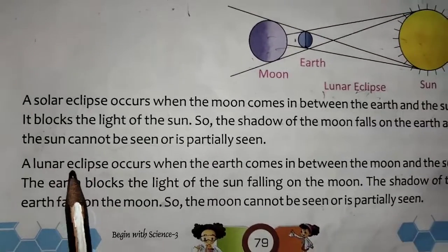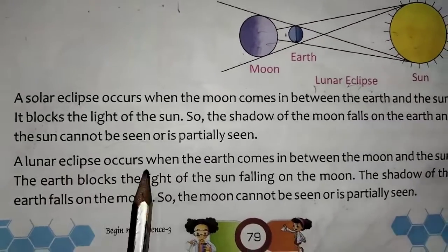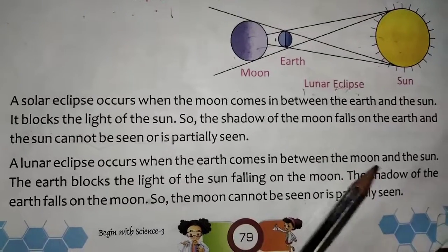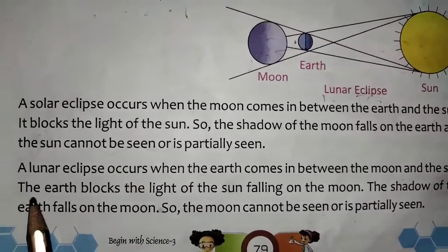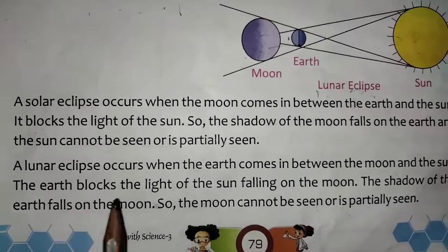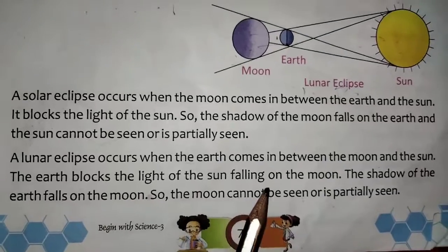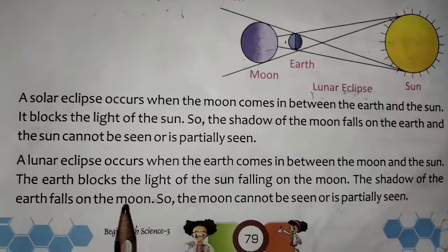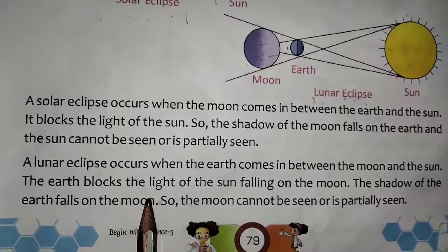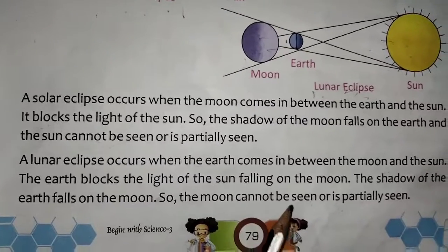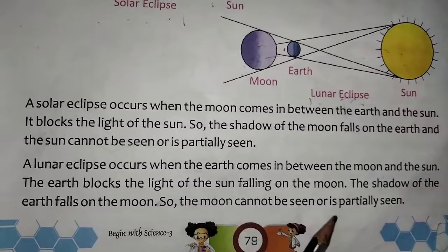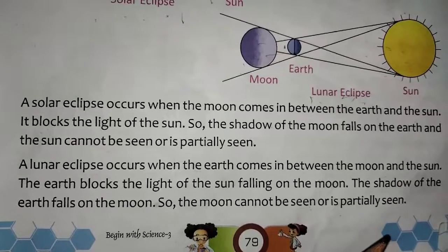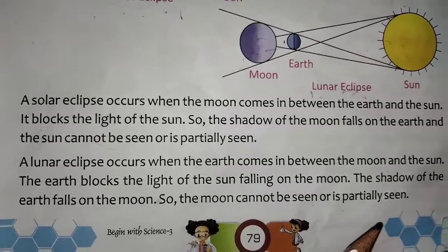A lunar eclipse occurs when the earth comes in between the moon and the sun. The earth blocks the light of the sun falling on the moon. The shadow of the earth falls on the moon, so the moon cannot be seen or it is partially seen. This is known as a lunar eclipse.